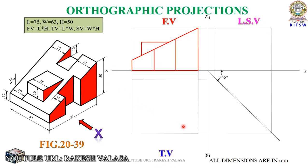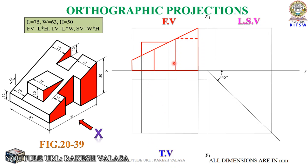After completion of the front view, we need to draw the top view. For easy construction, from each and every corner point or edge point of the front view, draw vertical projectors down to the top view rectangle box.